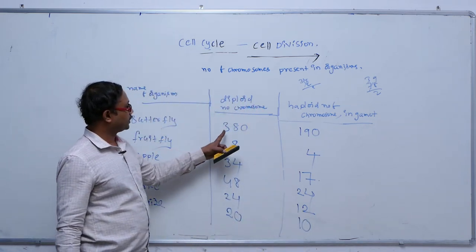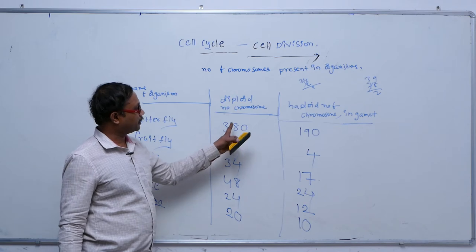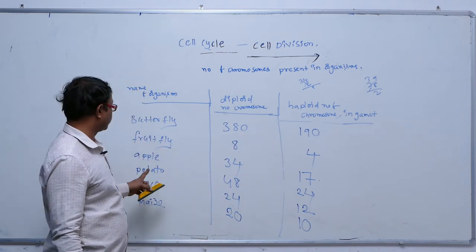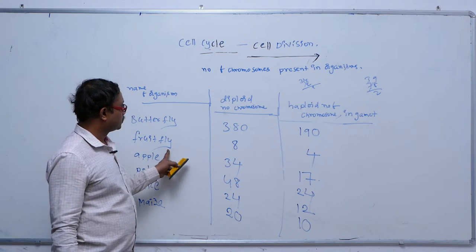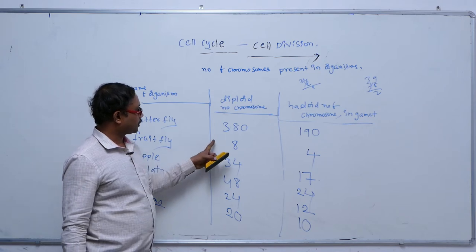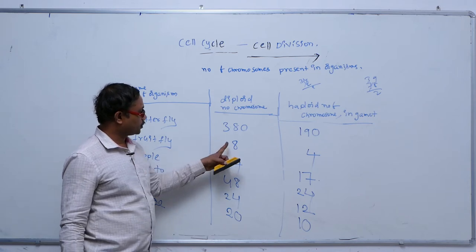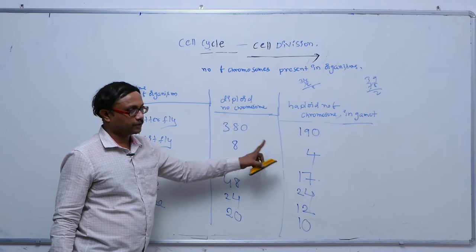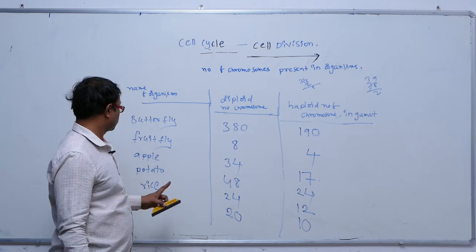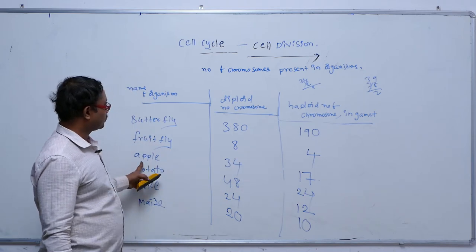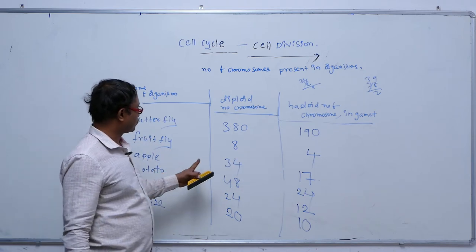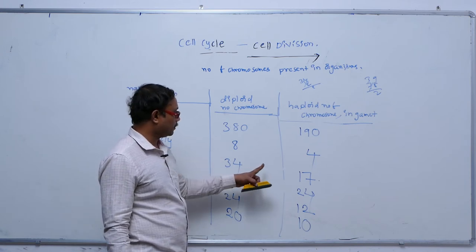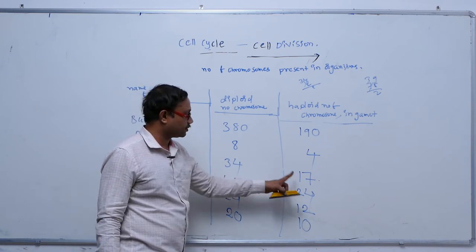To recap: butterfly has a diploid number of 380 and haploid number of 190 in the gamete. In fruit fly, diploid number is 8 and haploid number is 4. In apple, diploid number is 34 and haploid number is 17.